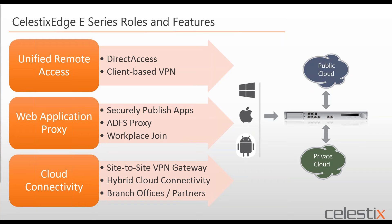The last area within the Celestix Edge E-Series is cloud connectivity — combining multiple environments or infrastructures with one central point. This is primarily site-to-site VPN gateway functionality: creating IKE or GRE tunnels to Azure, Amazon, corporate data centers, or partner branch offices. The Edge E-Series is designed to be flexible enough to marry different scenarios into one appliance.